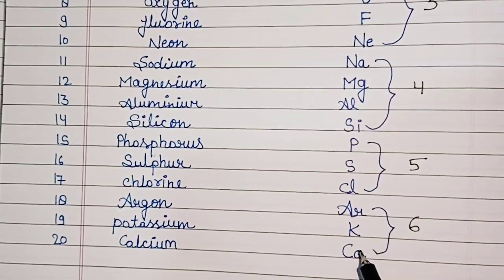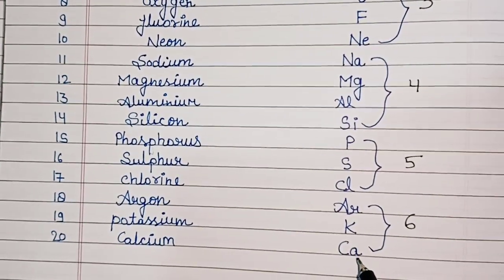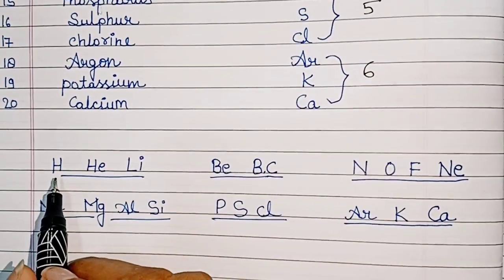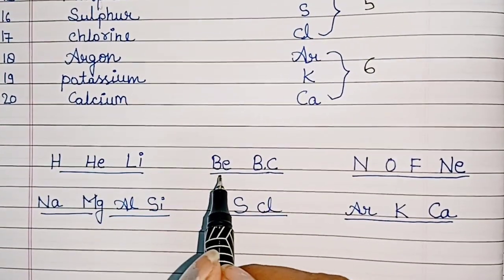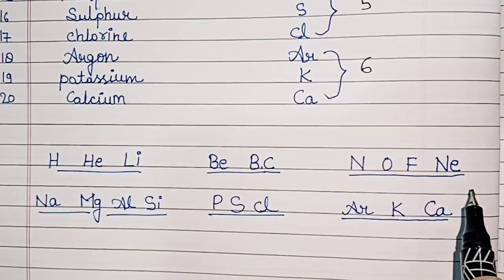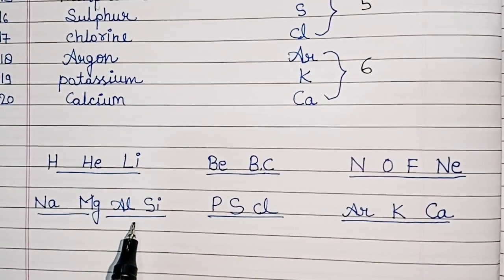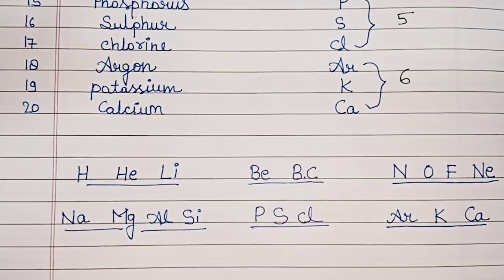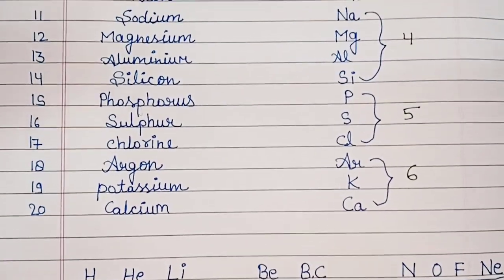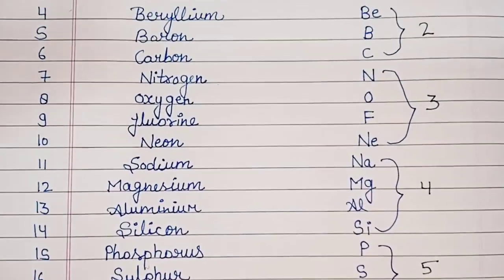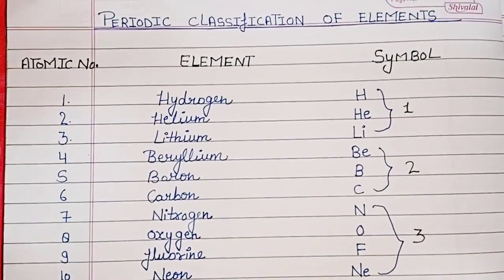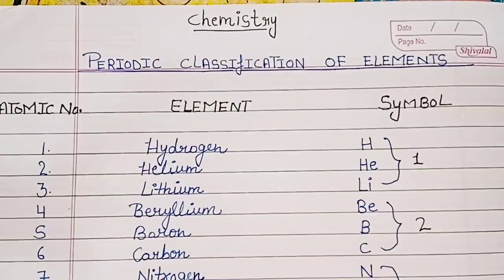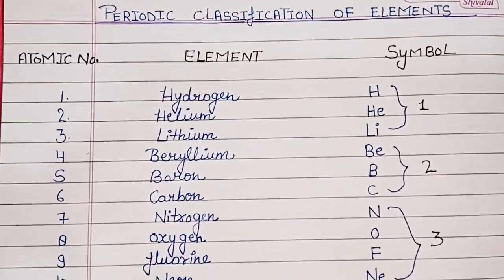The sixth slot is 'aray kaka' — Argon, Potassium, Calcium. Now you can learn it very quickly: hi heli, bbc, no funny, na maang al si, fir se kli, aray kaka. This way you will be able to learn all 20 elements in the correct order. Learn it quickly!